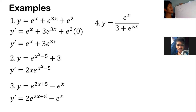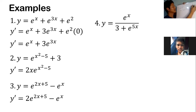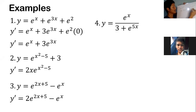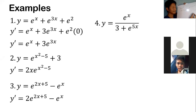We need to get the derivative of both numerator and denominator. The derivative of e to the x (u prime) is still e to the x. For v prime, the derivative of 3 is 0 (constant). The derivative of e to the 5x: copy e to the 5x, then times the derivative of 5x, which is 5.